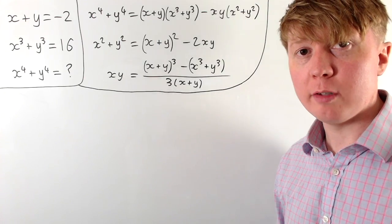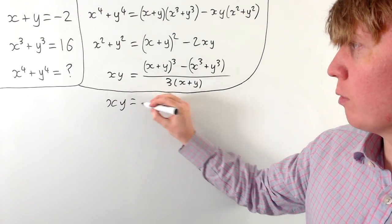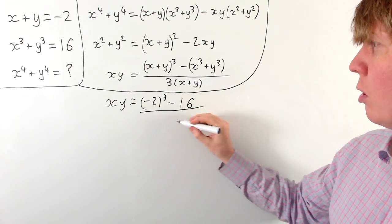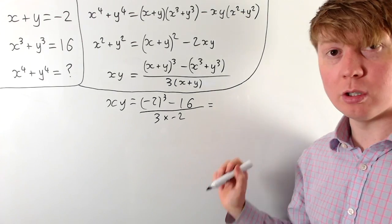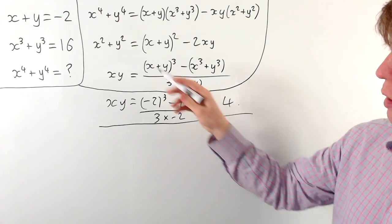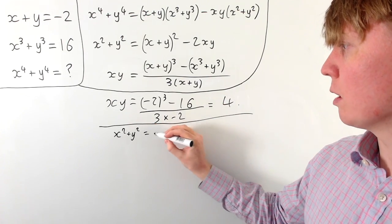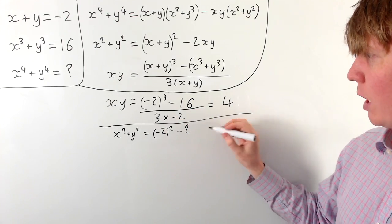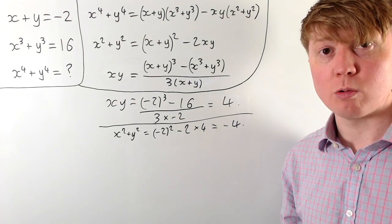We can now find the value of xy by substituting in. xy equals negative 2 cubed minus 16, all divided by 3 times negative 2. This gives us negative 8 minus 16 over negative 6, which is negative 24 divided by negative 6, so xy equals 4. Then x squared plus y squared equals negative 2 all squared minus 2 times 4, which gives us 4 minus 8, or negative 4.